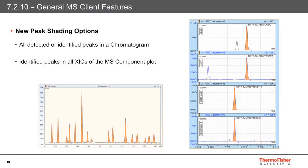To enhance the MS experience, further client features have been added to the software. I'll start with the new peak shading options available from the peak characterization tab via properties. Peak shading can be applied to all detected or identified peaks in a chromatogram, as well as the identified peaks in all extracted ion chromatograms, or XICs, of the MS component plot. It makes life easier when viewing data or trying to spot discrepancies during data review.